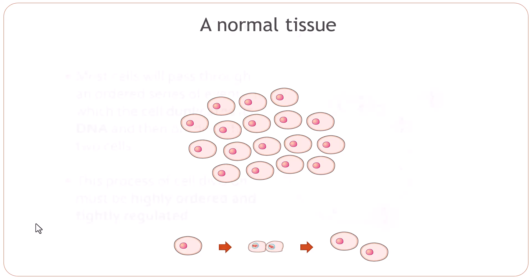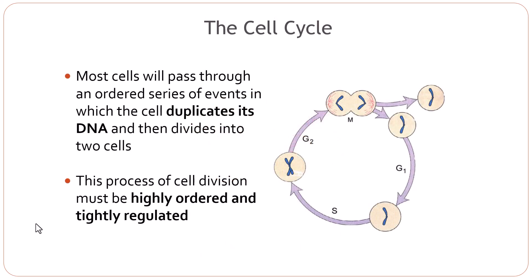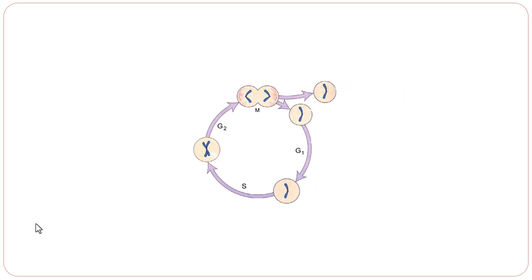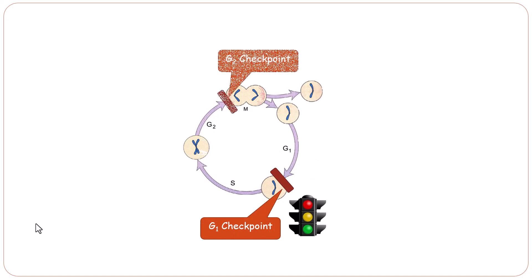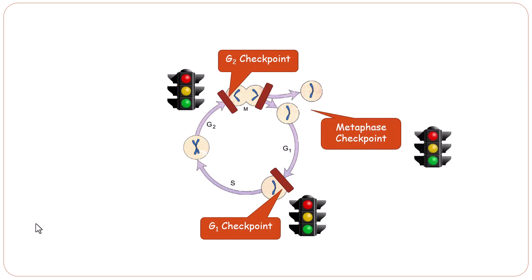The cell cycle is a multi-step process and cells will pass through an ordered series of events in which the cell will duplicate its DNA and then divide into two cells. As the whole DNA has to be duplicated without any error, this process must be highly ordered and tightly regulated. There are certain checkpoints along the phases of cell cycles — between G1 and S, G2 and the mitotic phase. There is one G1 checkpoint, one at G2, and one at metaphase.